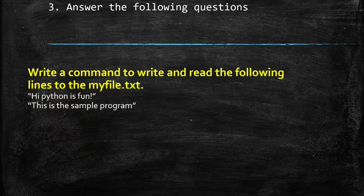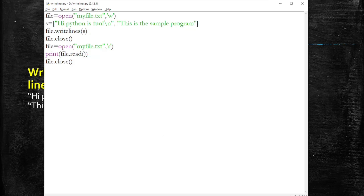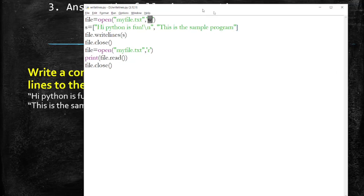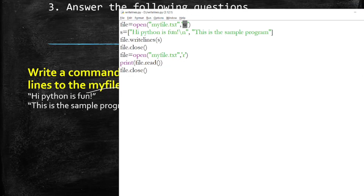Answer the following question: write the command to write and read the following lines to myfile.txt. This is a programming question where you have to both write and read a text file. The answer: file = open('myfile.txt', 'w'), then create a list s with strings like 'Hi\n', 'Python is fun\n', then use file.writelines(s) to write multiple lines. Close the file, open it again in read mode, and print file.read().